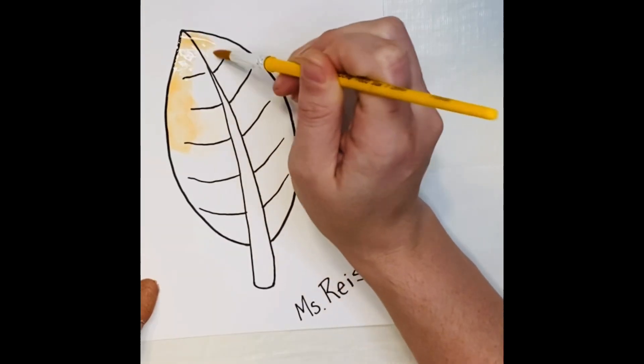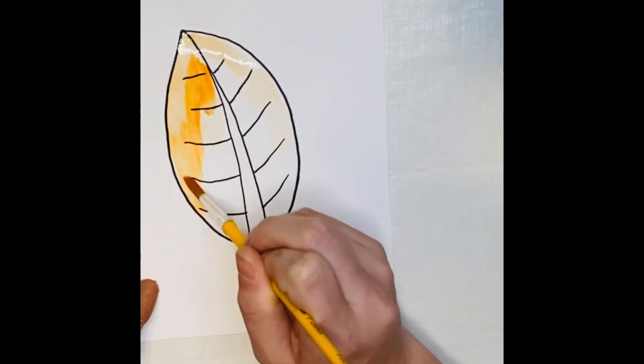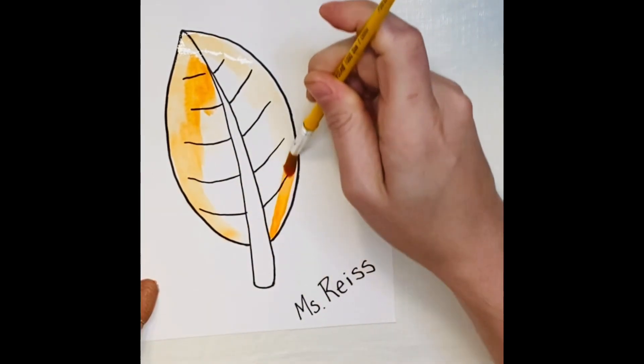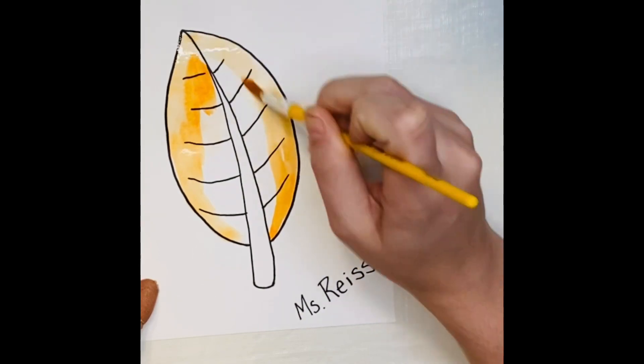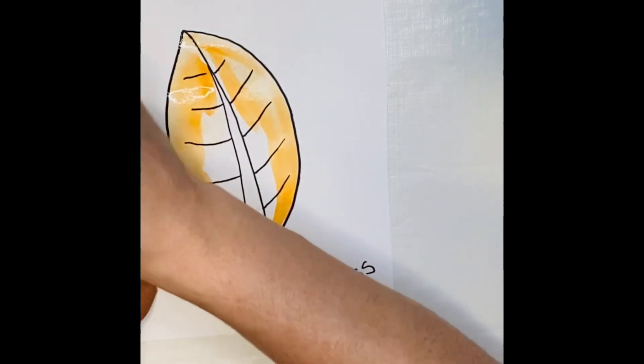Activate paint with a little bit of water. I'm now, after activating my paint, going to take just a little bit of paint, one color at a time, and mix it with some water.